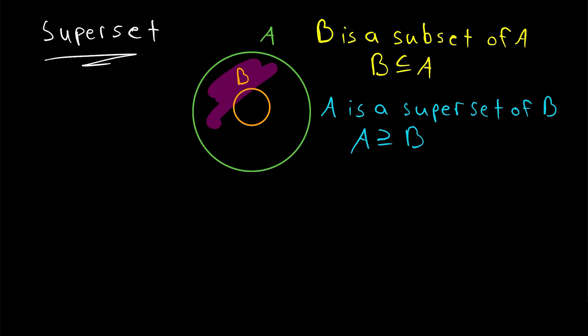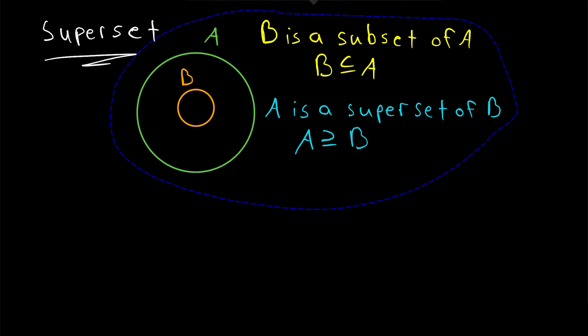A is a superset of B. This means that A contains every element of B. So the superset relation is the same as the subset relation, but in the opposite direction. If B is a subset of A, then A is a superset of B.